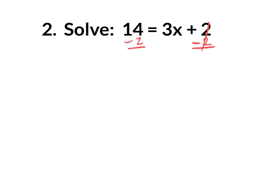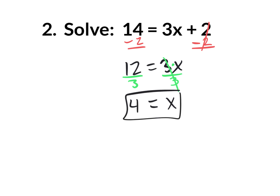What you do to one side you must do to the other, so you end up with 12 equals 3x, which is really 12 equals 3 times x. If you don't want that multiplication of three, you do the opposite — divide by three on both sides. That eliminates it, and you end up with x by itself. 12 divided by 3 is 4, so x equals 4. You can double check by plugging it back in: 3 times 4 is 12, 12 plus 2 really is 14.